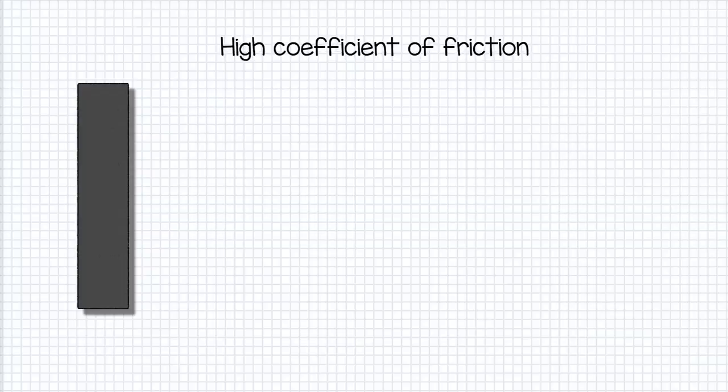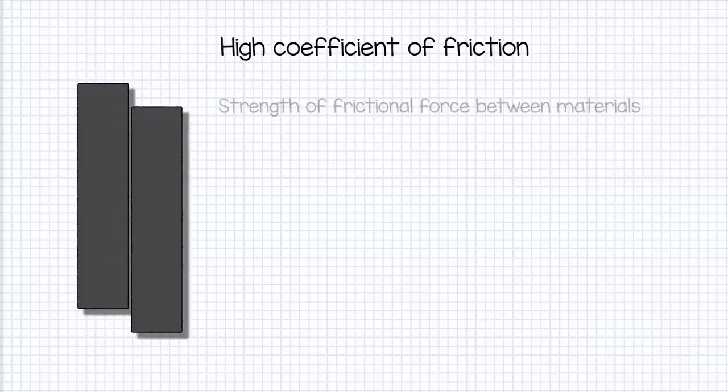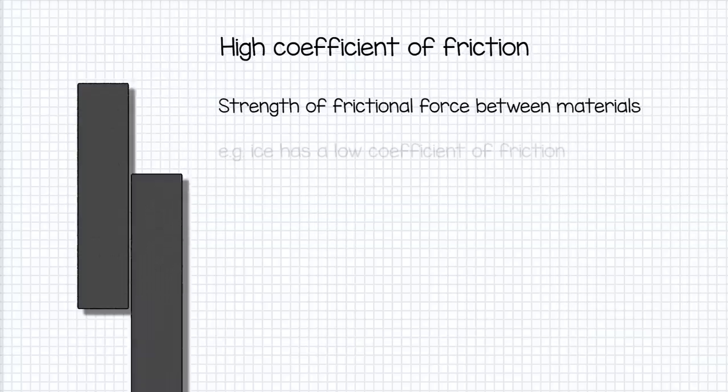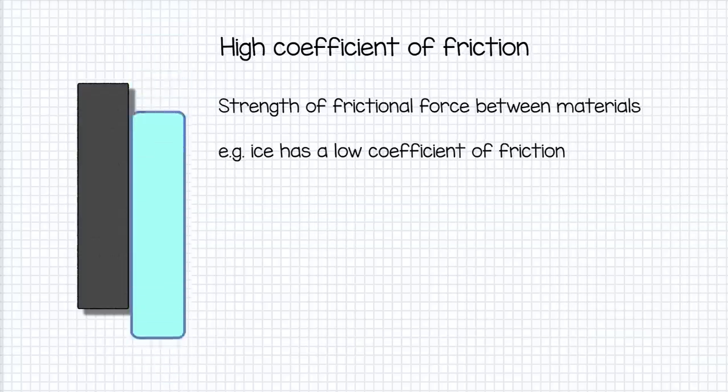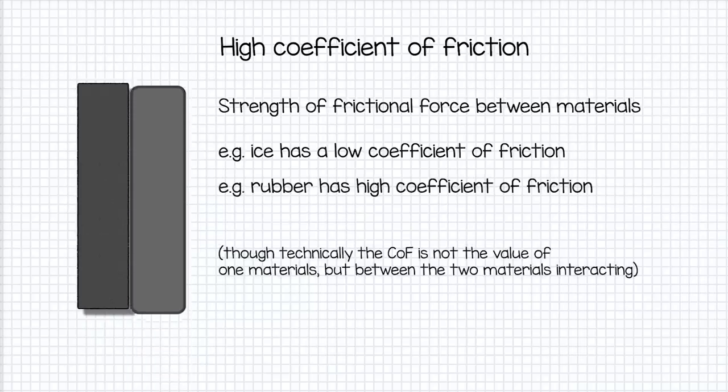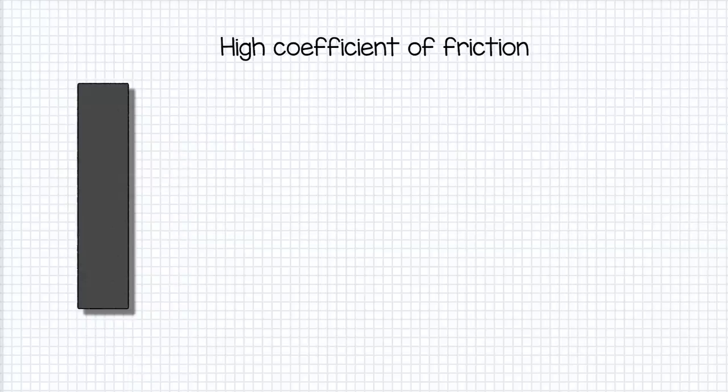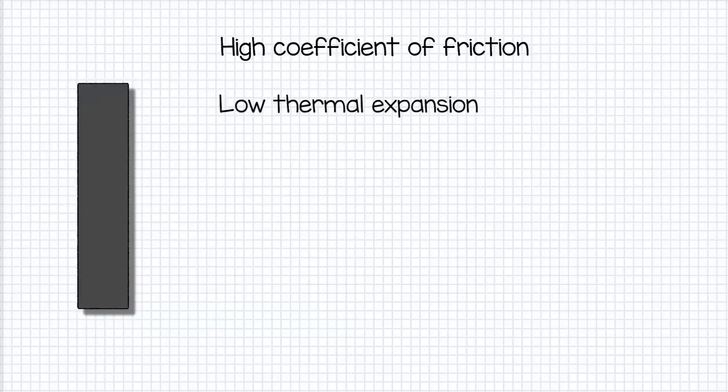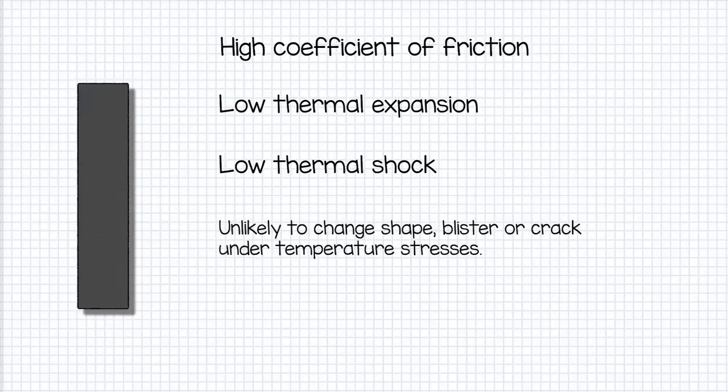Carbon carbon is strong and can withstand very high temperatures and has a very high coefficient of friction. The coefficient of friction of a material just tells you how well a material grips when rubbing against another material. Ice, being slidey, has low coefficient of friction. Rubber, being not slidey at all, has a high coefficient of friction. Carbon carbon also has very low thermal expansion and low thermal shock, meaning it won't deform or crack suddenly under high temperatures. This ability to stay robust under high temperatures is extremely important.